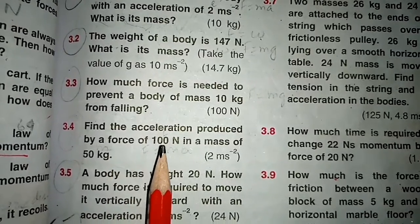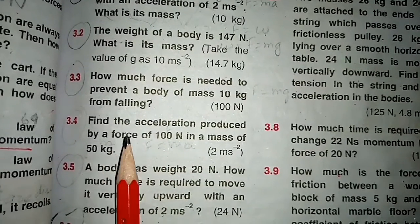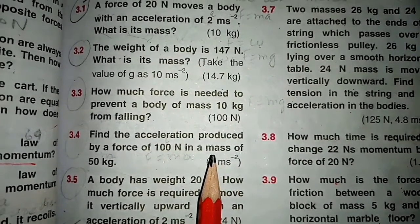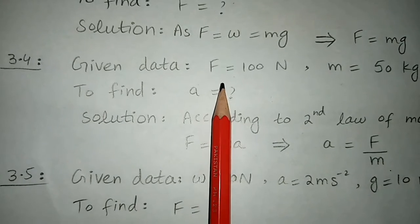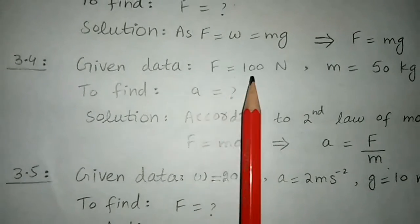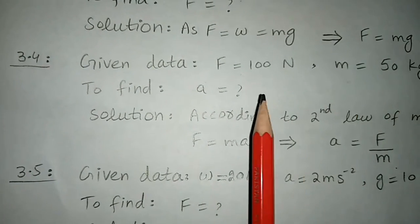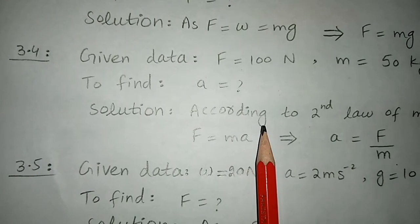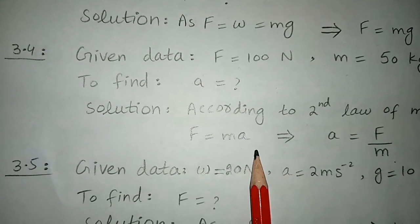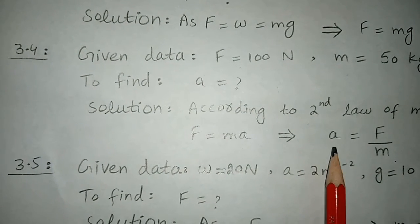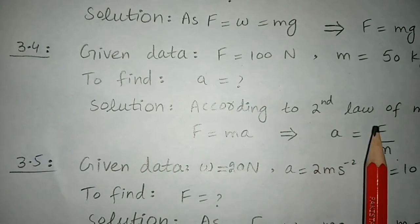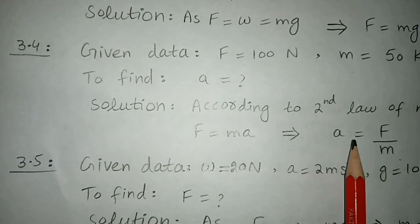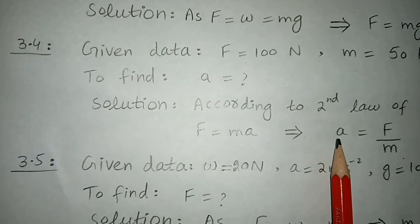Next, problem 3.4: find the acceleration produced by a force of 100 newton in a mass of 50 kg. Given data: force equals 100 newton, mass equals 50 kg, and we have to calculate the acceleration. According to the second law of motion, F equals ma. Rearranging the equation for a, we get a equals F over m. Simply put the force and mass values and the acceleration value will be calculated.